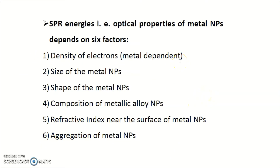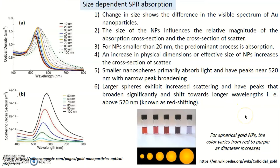The first factor — metal dependence — we have already seen in our last slide. Now we are going to see size, shape, composition, refractive index, and aggregation dependence. Let us start with size-dependent SPR absorption. You can see that the change in size shows a difference in the visible spectrum of gold nanoparticles.